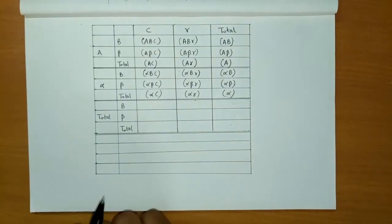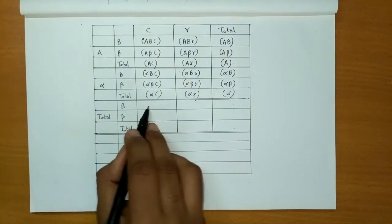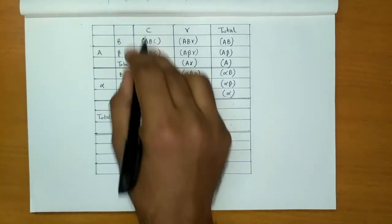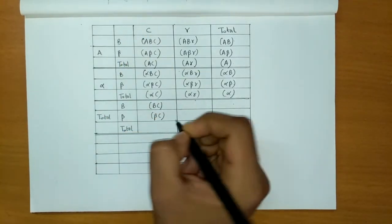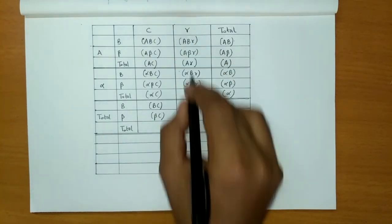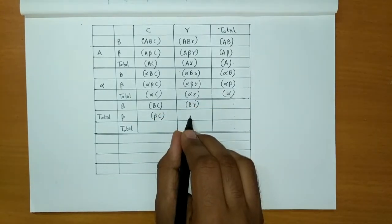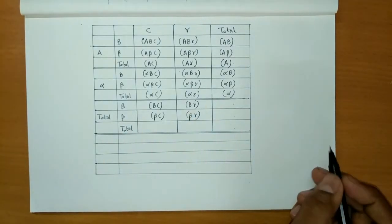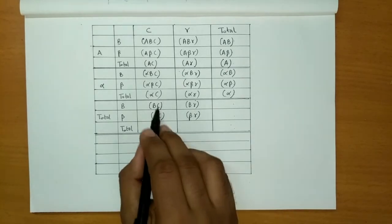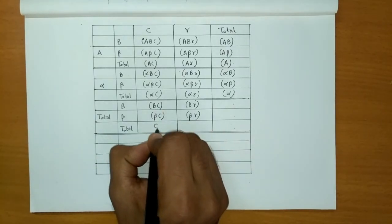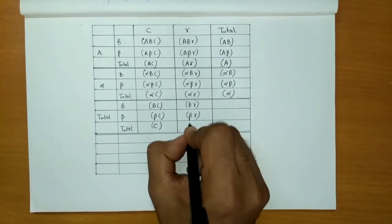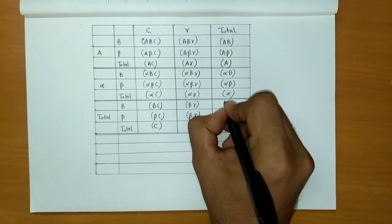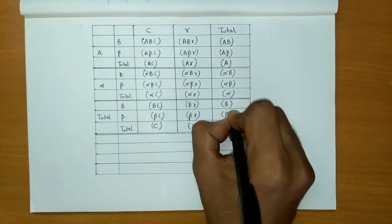For the last Total block, we don't write 'Total B, C' — we simply write B, C. The frequencies are: B, C; B, C; B, Gamma; and B, Gamma. Adding horizontally and vertically: common attribute is C, then Gamma, then B horizontally, and Beta for the remaining cell.